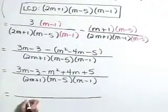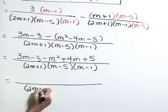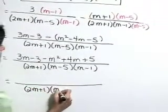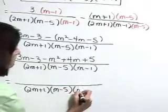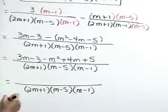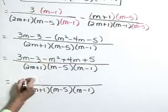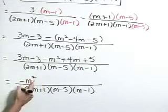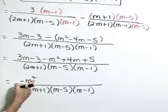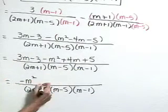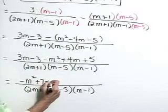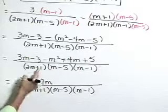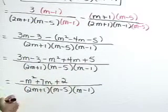Now let's combine like terms in the numerator. Don't forget that denominator, just continue to rewrite it each time. Combining like terms in the numerator, let's start with this negative m squared, the second degree term. Next, we have a 3m plus 4m, which is 7m. Lastly, negative 3 plus 5 is a positive 2.